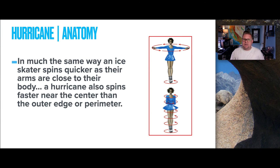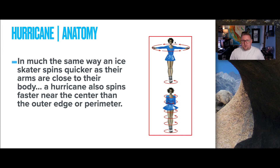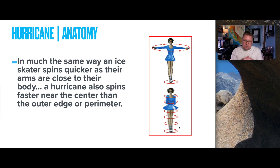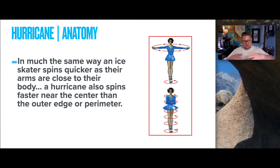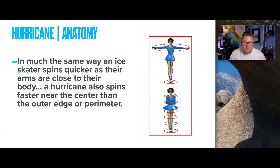In much the same way an ice skater spins quicker as their arms are closer to their body, a hurricane also spins faster near the center than the outer edge. When things are pulled in toward the middle, speed accelerates — similar to gear ratios on bikes and cars, where being closer to the center allows faster spinning.